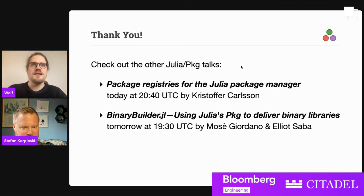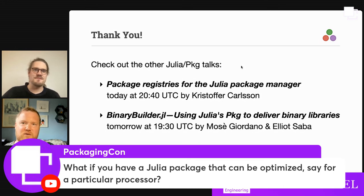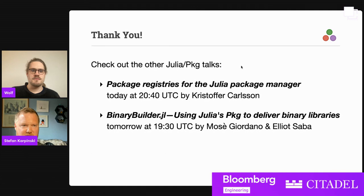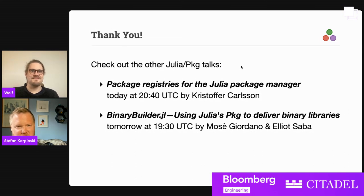Thanks Stefan. We had a question: what if you have a Julia package that can be optimized for a particular processor? The binary builder does support variations down to the processor level. Not every binary dependency cares or takes advantage of that, so you don't have to shard down to that level, but you can. We even have support for things like what type of GPU you might have — the system is used for prebuilt GPU libraries as well. The result is kind of astonishing: you can just install stuff and have a working GPU stack in 30 seconds, whereas normally getting a working GPU stack is like a couple of days of effort the first time around.